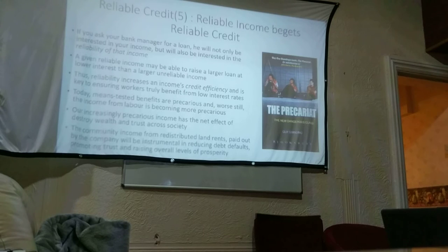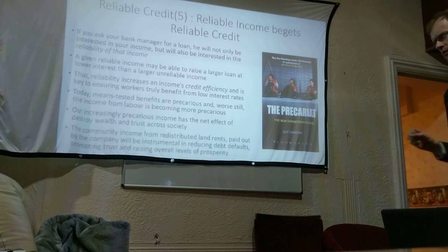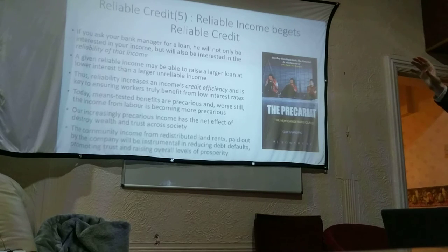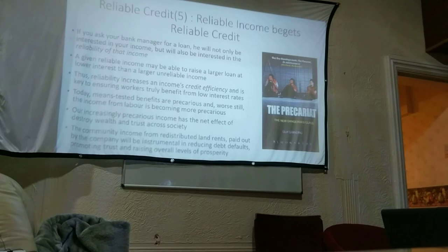The community income from redistributed land rents paid out by the company will be instrumental in reducing debt defaults, promoting trust, and raising overall levels of prosperity. Not only can the company bank handle defaults on debt — because it doesn't need to be making a profit all the time — but the community income will probably mean there'll be fewer defaults in the first place.